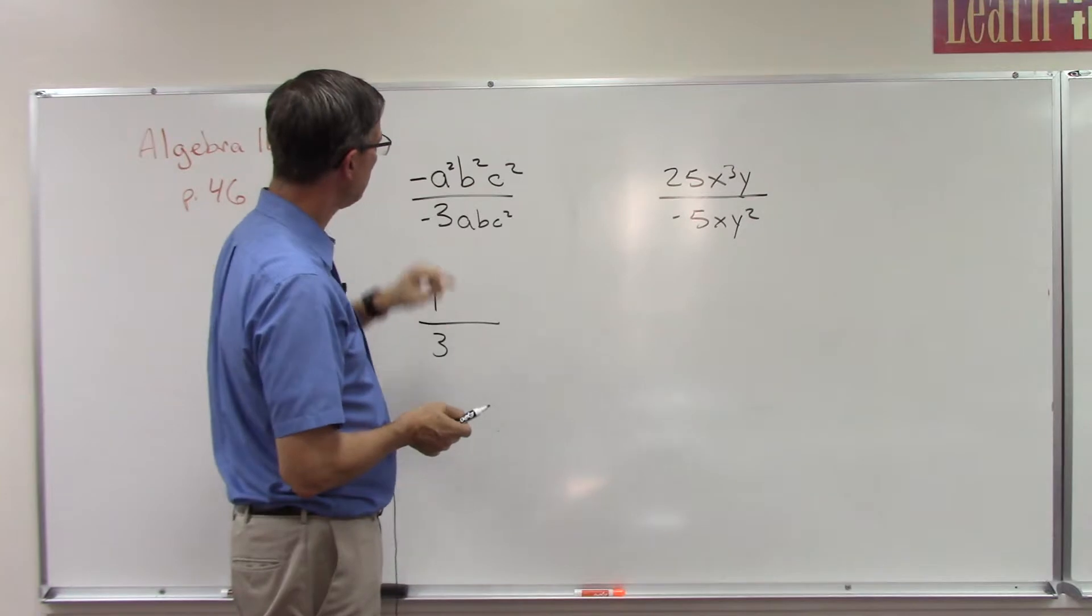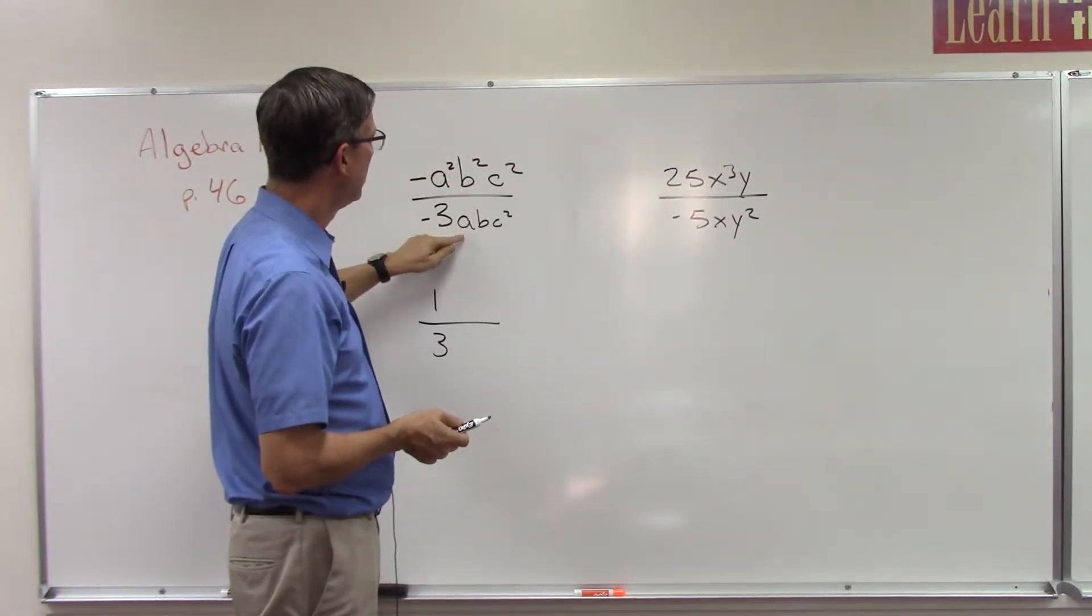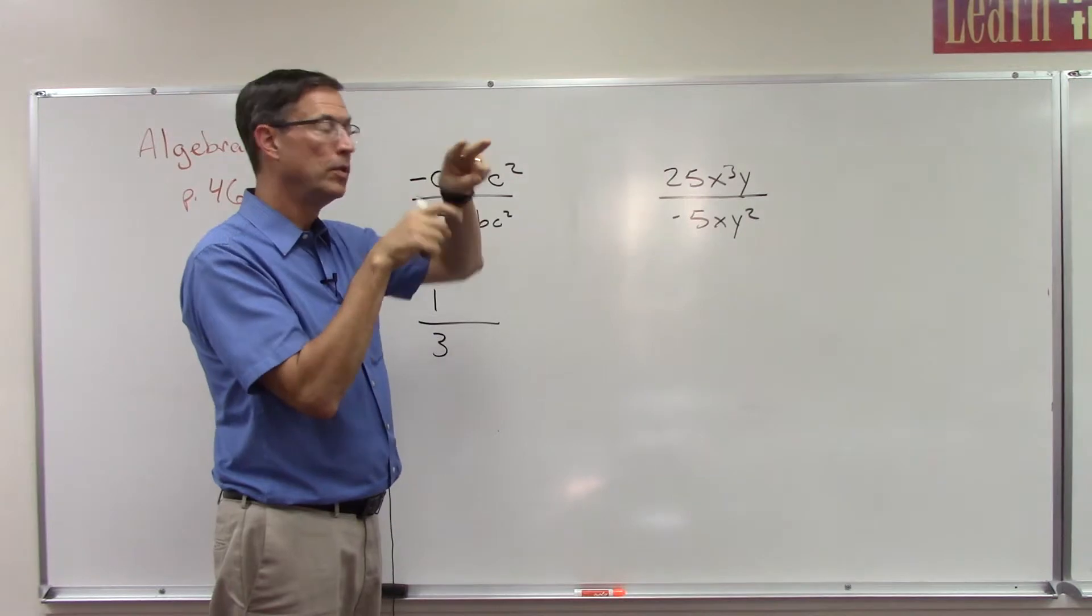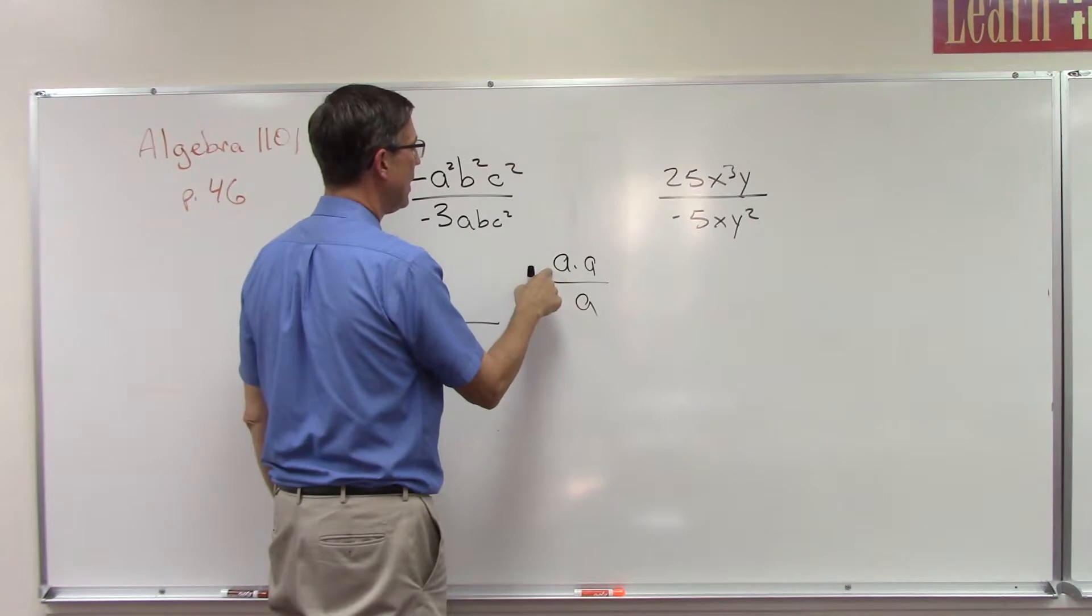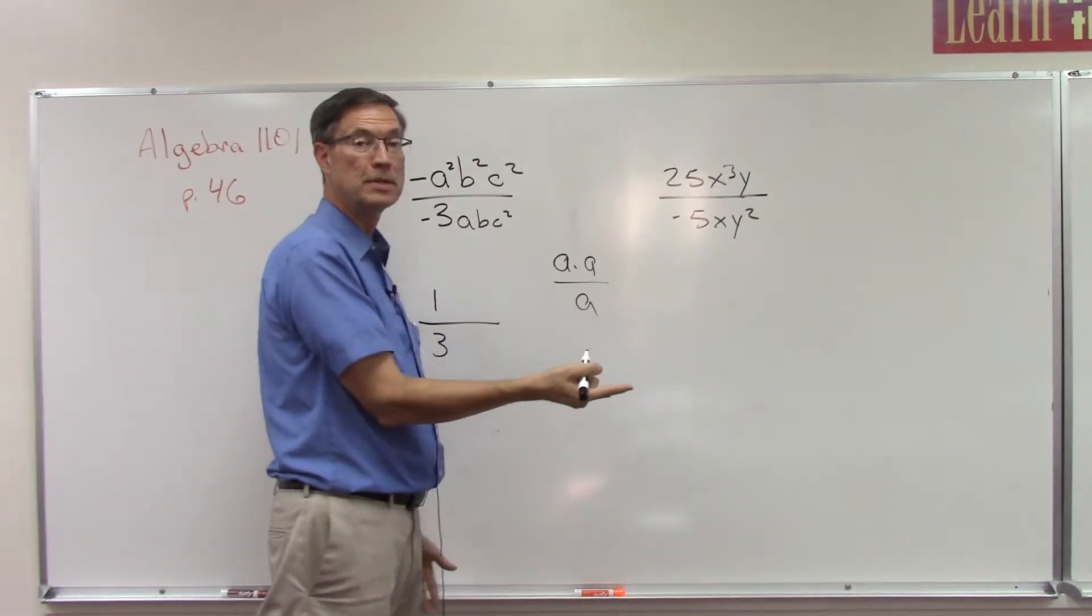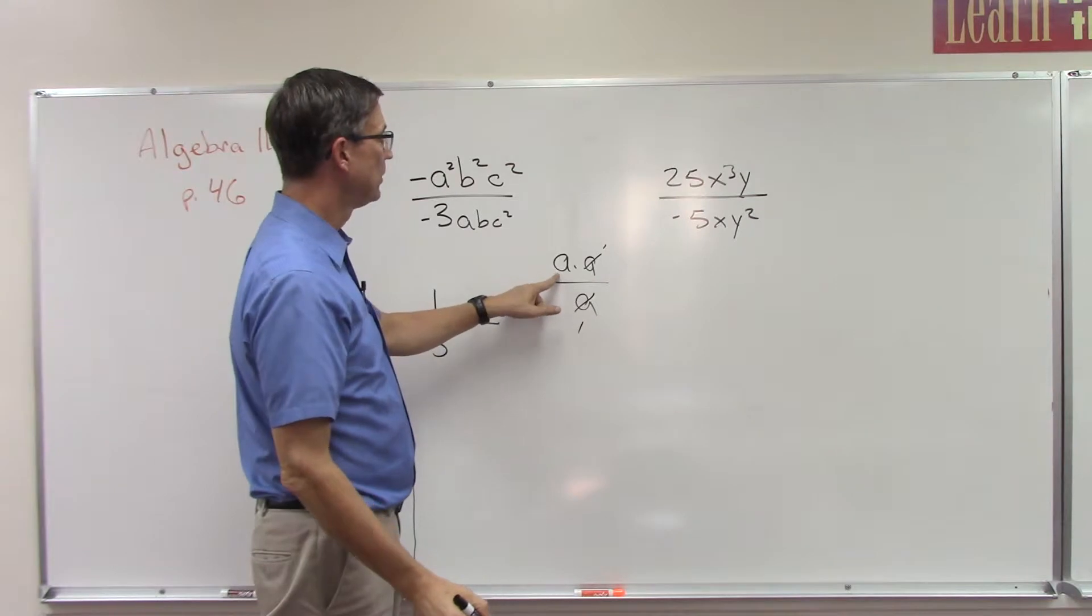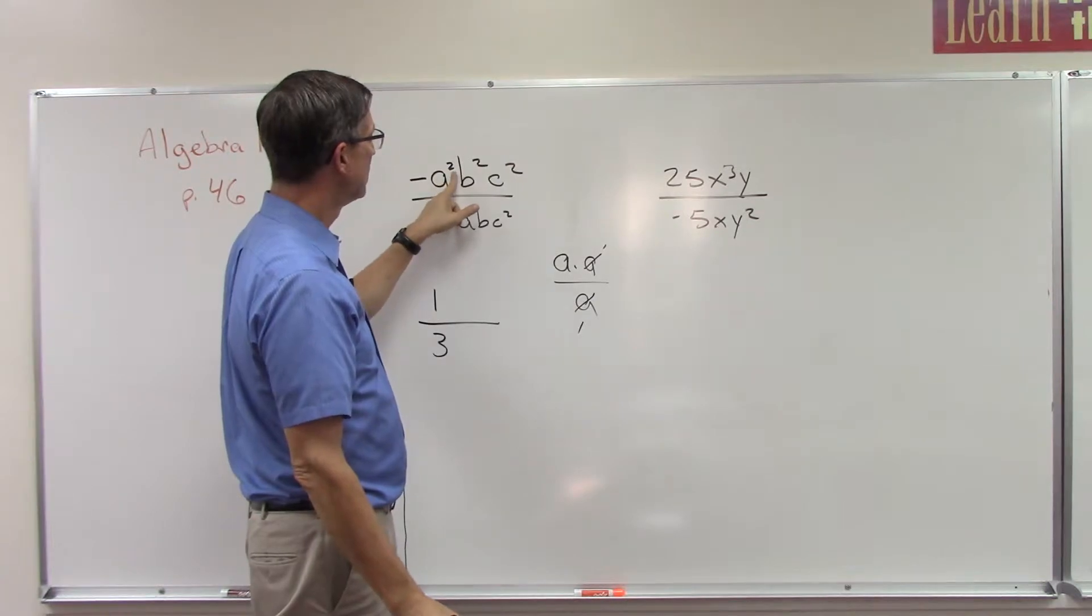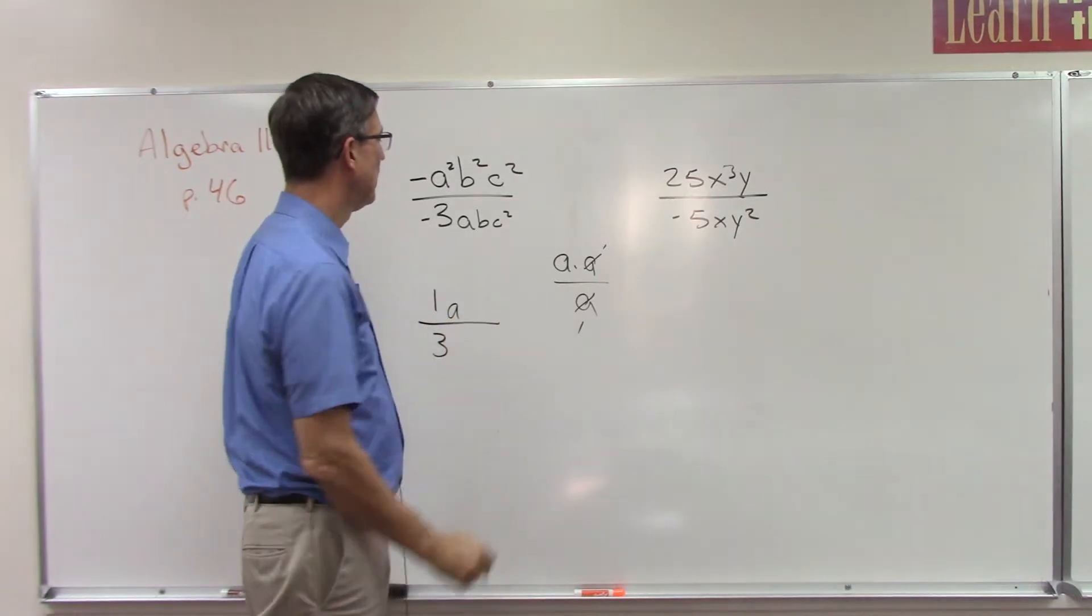Looking at the a, we have a to the second power here, a to the first power there. It's like saying I have two a's up here, one a down here - these two are going to cancel out. a squared, which is a times a, with one a on the bottom - anything divided by itself cancels out and becomes one. All I'm left with is an a, and notice it's on the top. The larger exponent, the 2, is on the top, so when I subtract one, I'm just going to leave the a up here on the top.